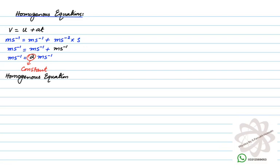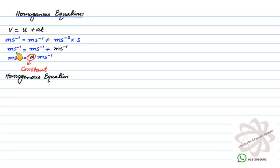In this equation v = u + at, the SI base unit of v (velocity) is ms⁻¹. Similarly, u (initial velocity) is ms⁻¹. Acceleration is ms⁻² and time is in seconds, so ms⁻² × s becomes ms⁻¹. On the right-hand side, ms⁻¹ + ms⁻¹ gives ms⁻¹, which equals the left-hand side.